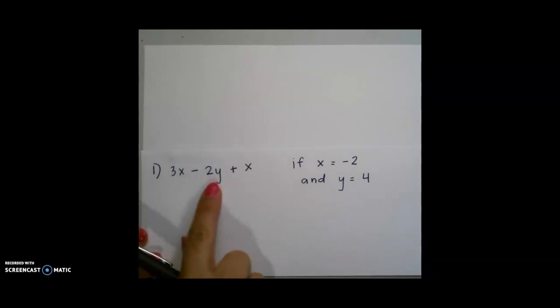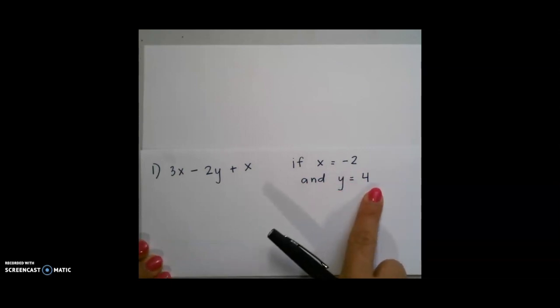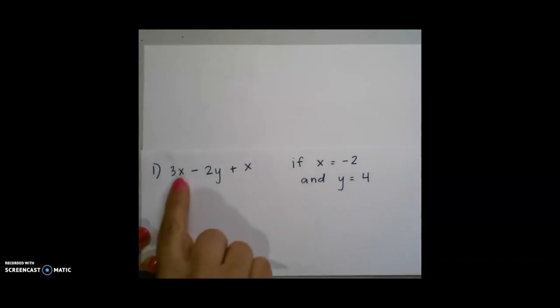For our first example, we have 3x minus 2y plus x. If x equals negative 2, then y equals 4. We start by substituting. We're not solving anything yet. Again, remember that 3x equals 3 times x.